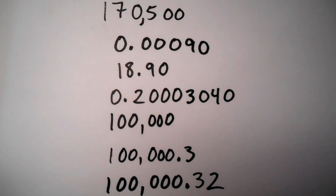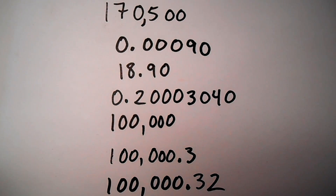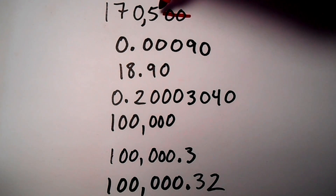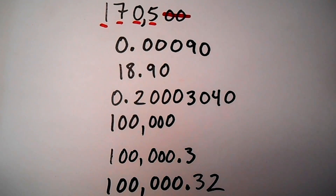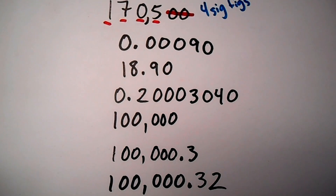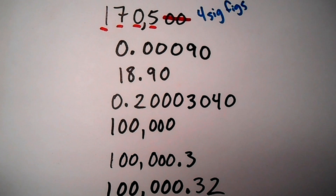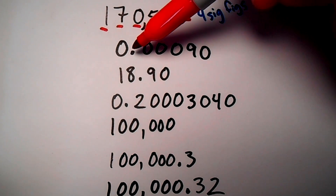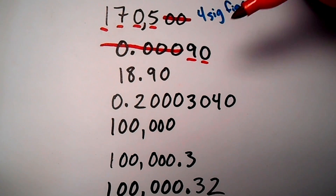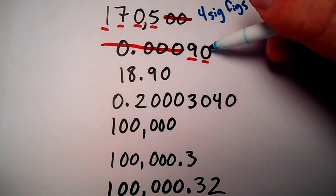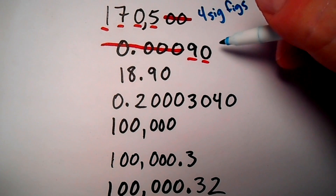For the first value, the decimal is absent so we start on the Atlantic side, cross off zeros until we get to the first non-zero number, and all remaining numbers are significant — this one has a total of four significant figures. For the next one, the decimal is present so we start on the Pacific side, cross off zeros until we get to the first non-zero number which is a nine, and all numbers following that are significant. The last zero was actually a measured-out value — the device was able to measure and report it — so this has two sig figs.